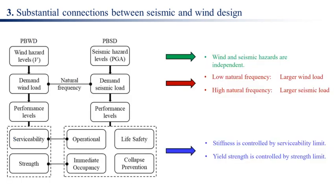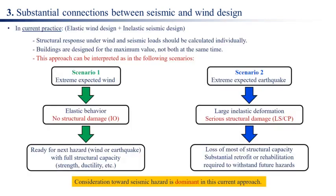Wind and seismic hazards are independent. Low natural frequency leads to larger wind load; high natural frequency leads to larger seismic load. Stiffness is controlled by the serviceability limit, and yield strength is controlled by the strength limit. In current practice, structural response under wind and seismic loads is calculated individually, and buildings are designed for the maximum value — not both at the same time.